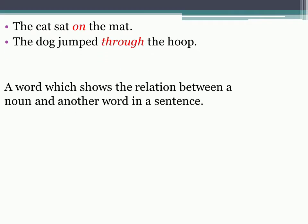The cat sat on the mat. The dog jumped through the hoop. The words on and through are called prepositions.